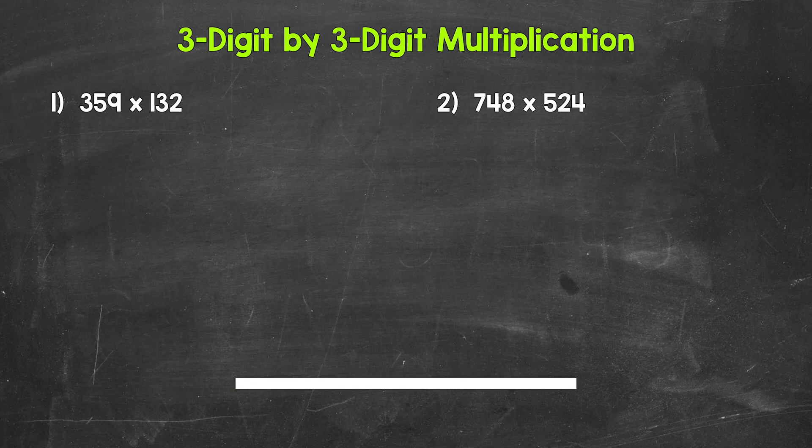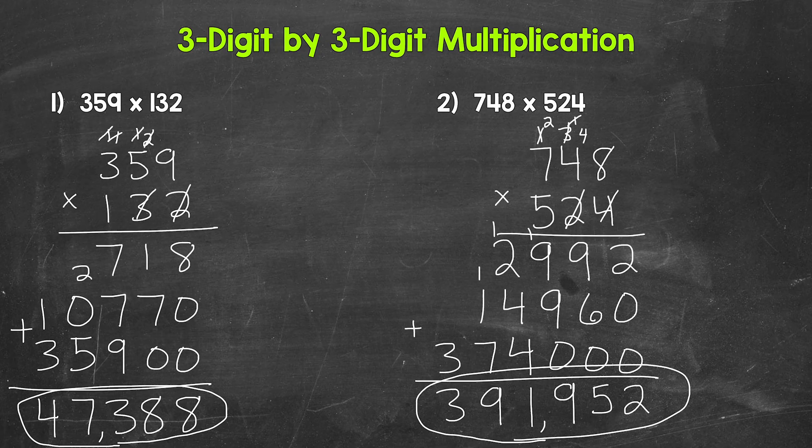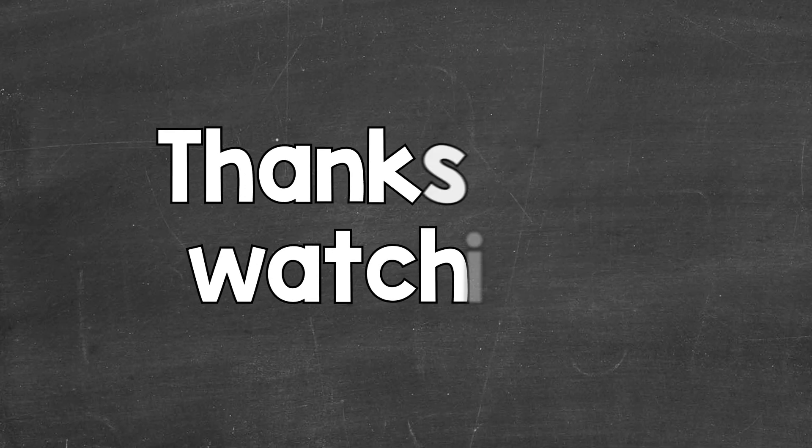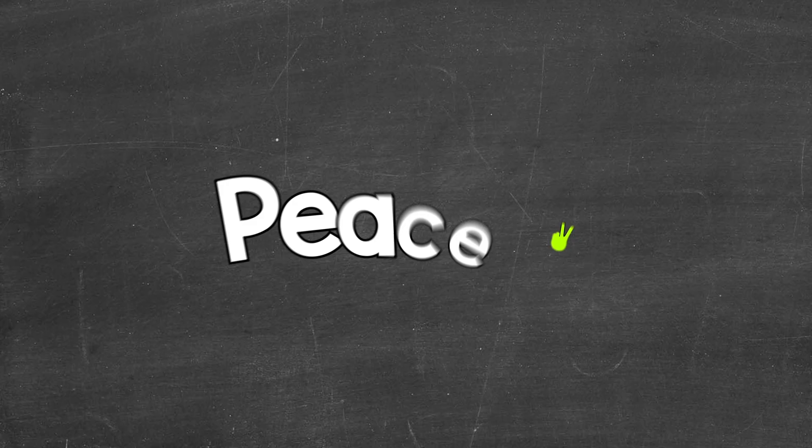Okay, so that was four minutes. Let's go over the answers. For number one, 359 times 132 equals 47,388. For number two, we have 748 times 524, which equals 391,952. So there you have it — that's how to multiply a three-digit number by a three-digit number. I hope that helped. Thanks so much for watching. Until next time, peace.